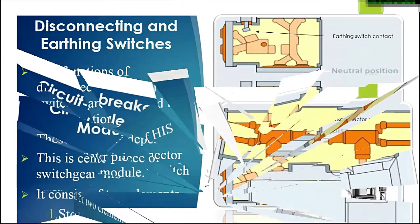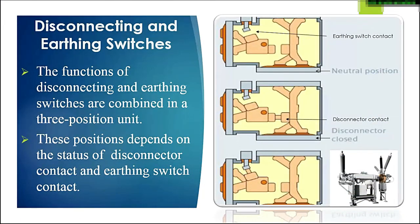Next are disconnecting and earthing switches. Disconnecting and earthing switches are combined in a three-position unit. The three positions are: neutral position, disconnector closed, and earthing switch closed. The orange highlighted area in the small diagram shows where the disconnecting and earthing switches are located in the HIS module.